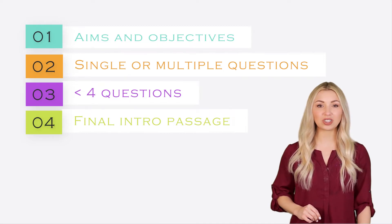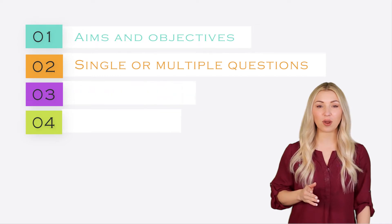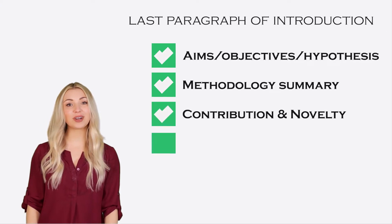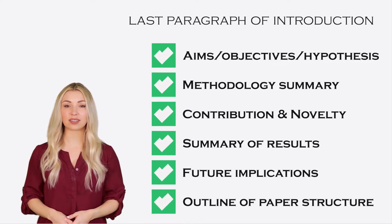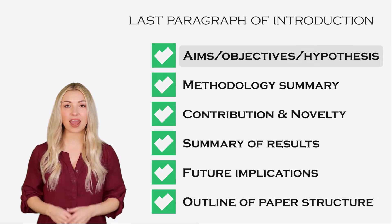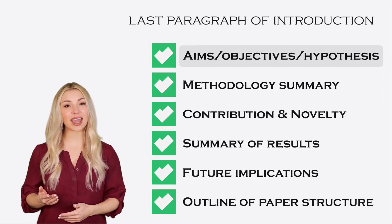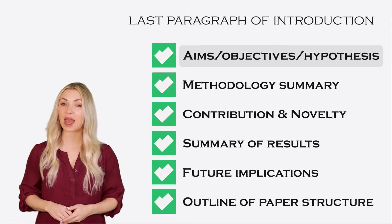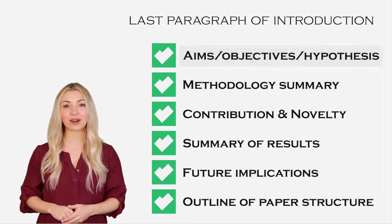The research question is normally one of the major components of the final paragraph of the introduction section. The last paragraph of your introduction section will typically contain the following parts. You can start this section by clearly defining the research question, which is the aims and objectives of your work. If your work is driven by a hypothesis, then you have to define your hypothesis here.